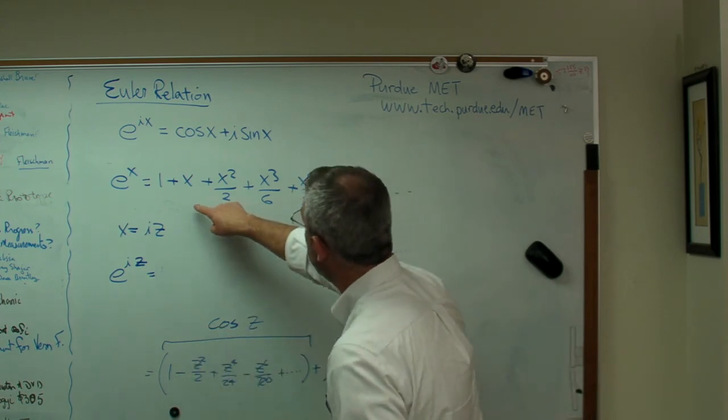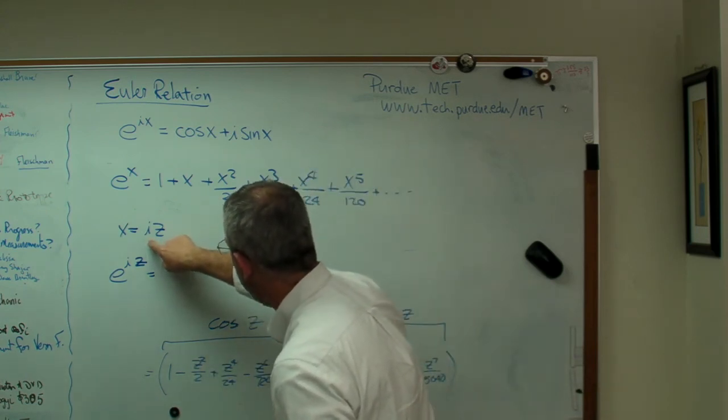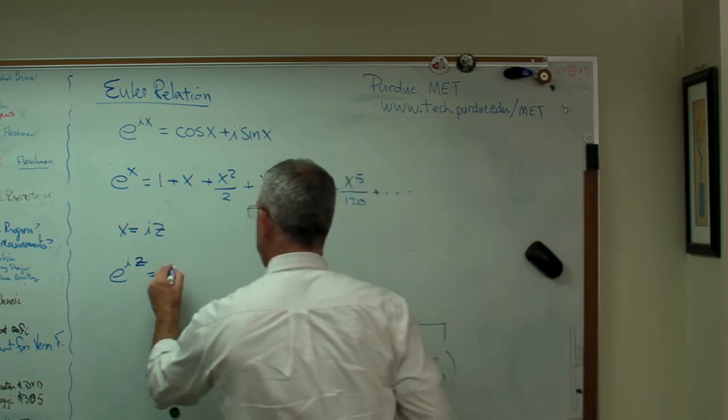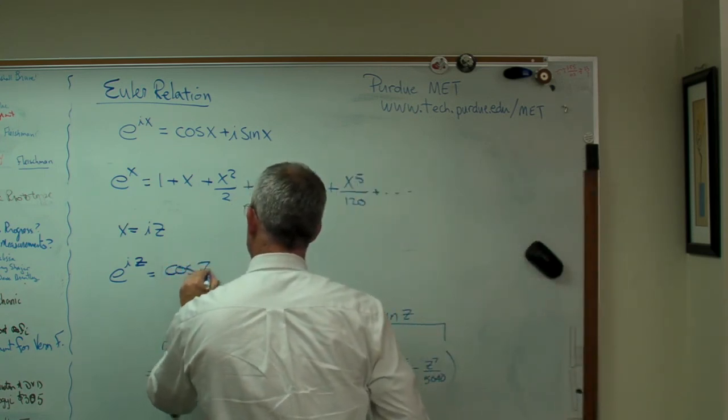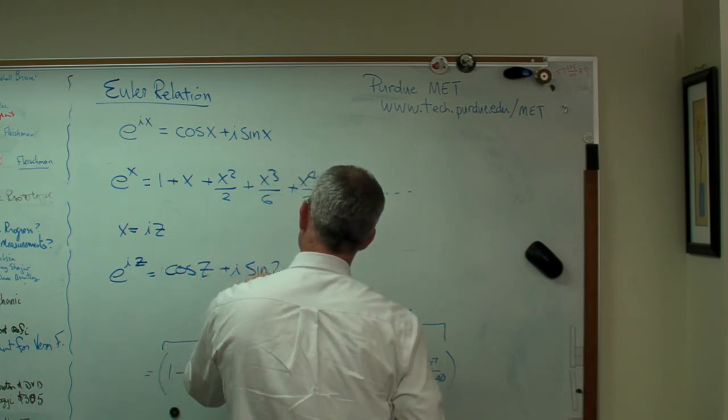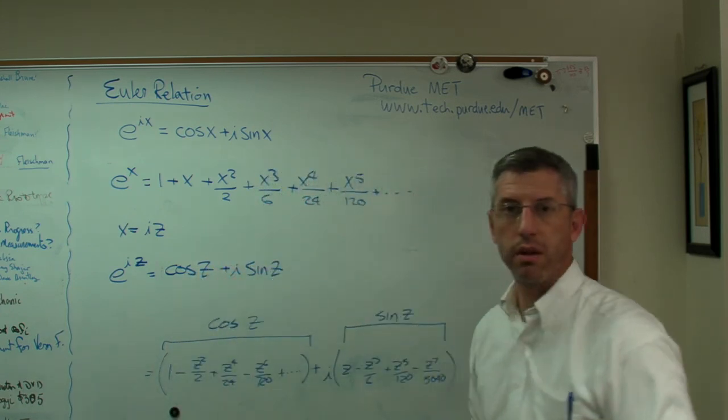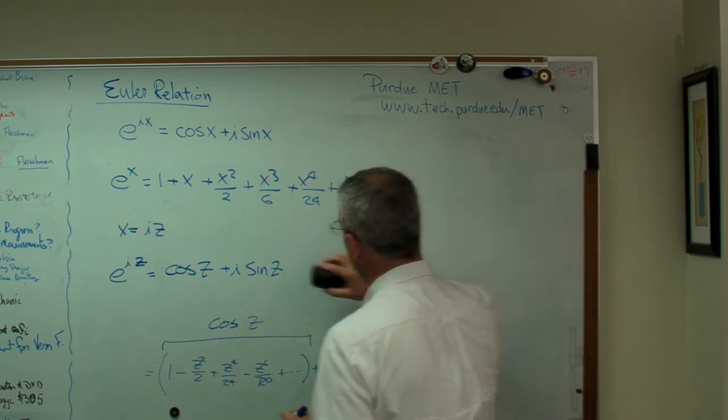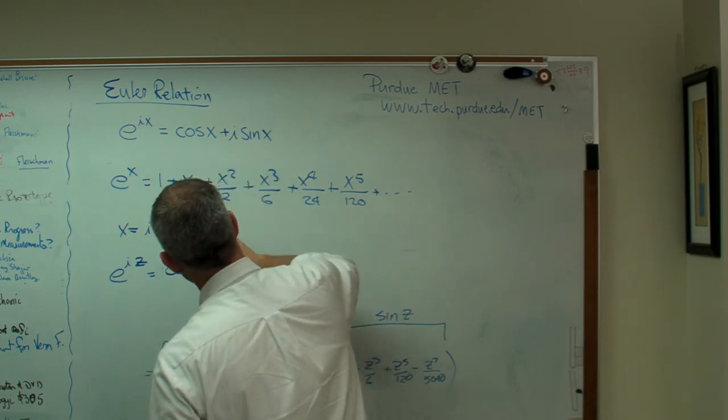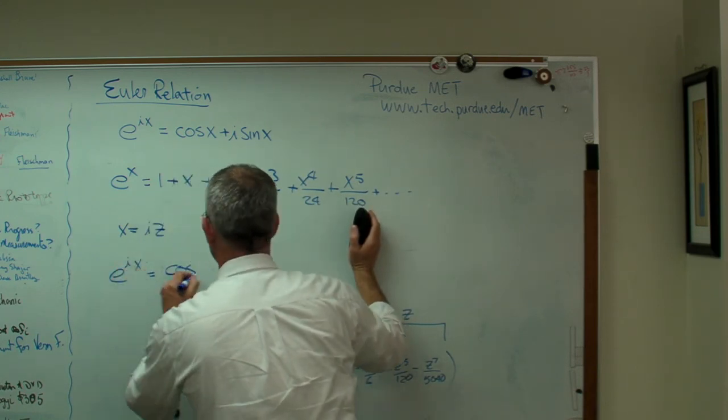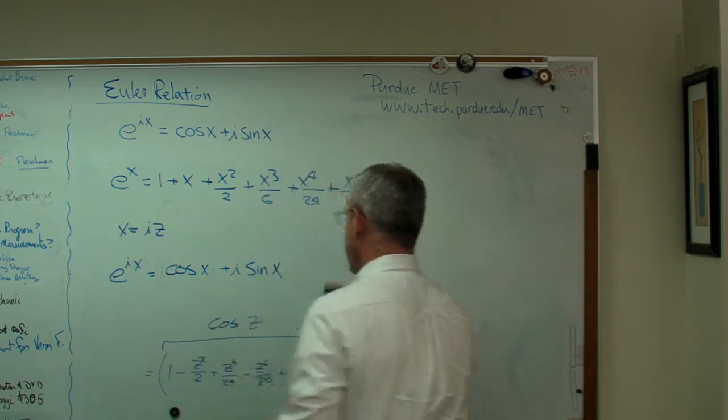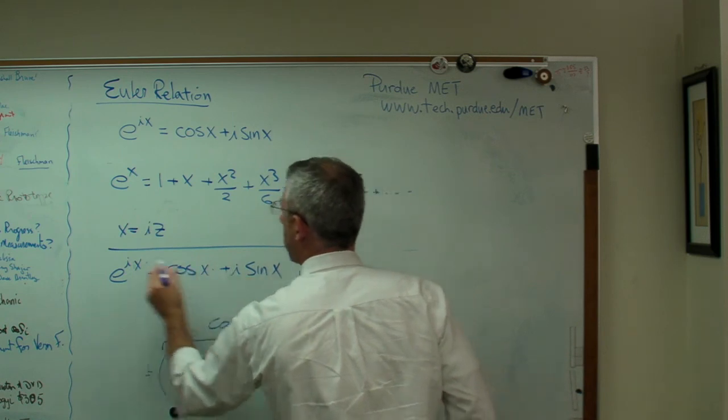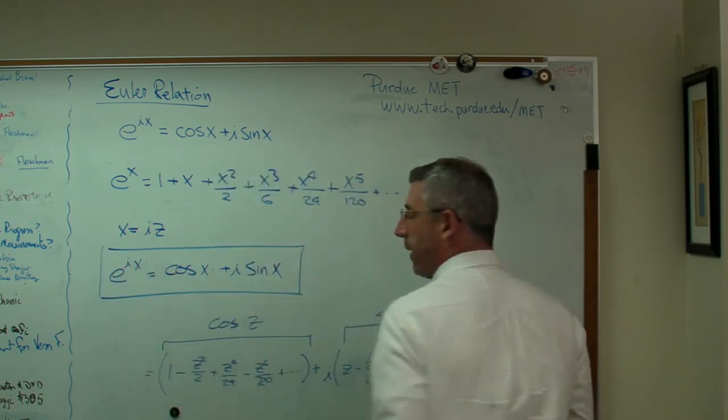So by writing this out, substituting that in, writing the whole thing out, and then collecting the real and the imaginary terms, he was able to say this is true. Now I'm using the variable z here. If you prefer to write this as x or theta, usually we see this written with an x there, so I'll just change it real quick. A variable is a variable. It doesn't really matter what we call it, as long as we're consistent. And there's the Euler relation. That's where it comes from.